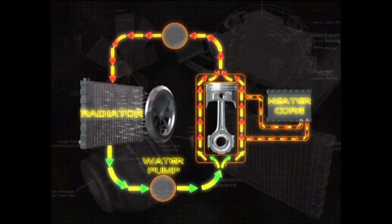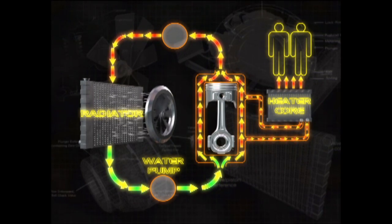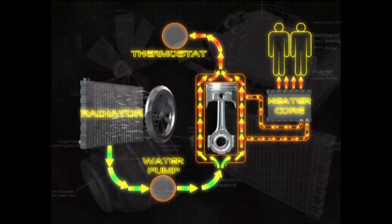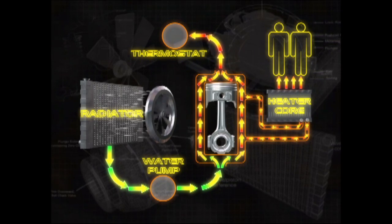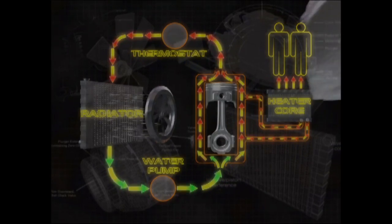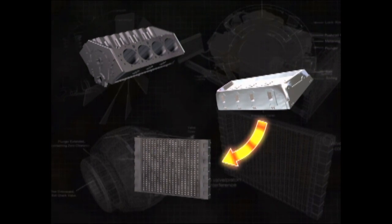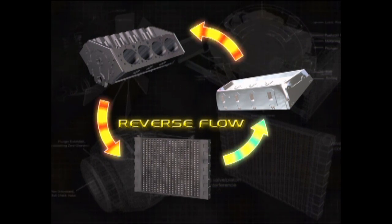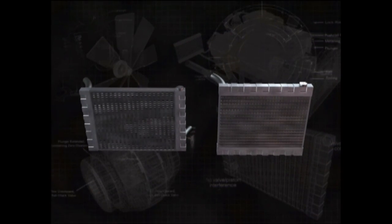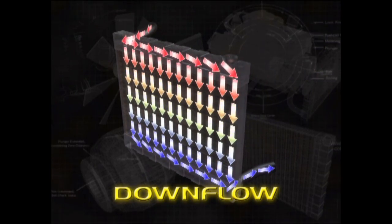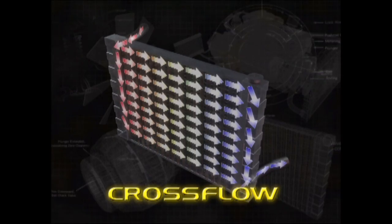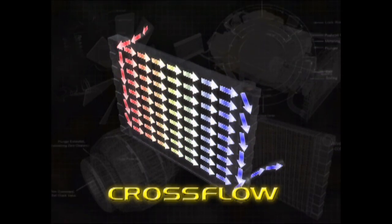The heater core uses hot coolant to warm air for the passenger compartment. During starting when the cooling system is below normal operating temperature, the thermostat blocks the flow of coolant to the radiator, allowing the engine to warm more quickly. At a predetermined temperature, the thermostat opens and allows coolant to flow to the radiator. In a conventional setup, hot coolant flows from the cylinder heads into the radiator and back into the block. Many high-performance engines use reverse flow, where cooled coolant leaves the radiator, flows into the head, then exits the block and returns to the radiator. Radiators have two basic designs: in the downflow design, coolant enters at the top and flows down vertical cooling tubes; in a cross-flow radiator, coolant flows horizontally through the cooling tubes.